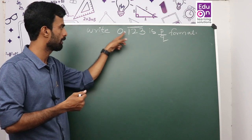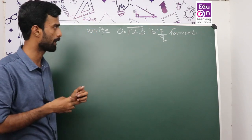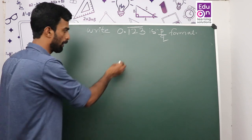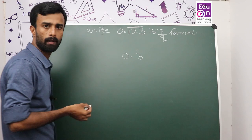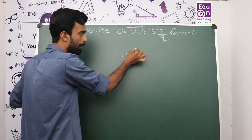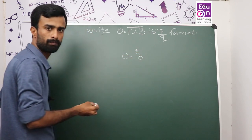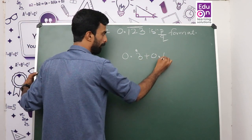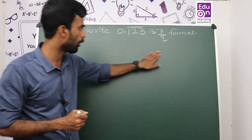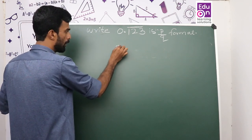Write 0.123 recurring in P by Q format. This is the recurring decimal point 0.123. We will look at the method and the logic here. When you look at the structure, you can look at the different axes of the two-by-nine approach.